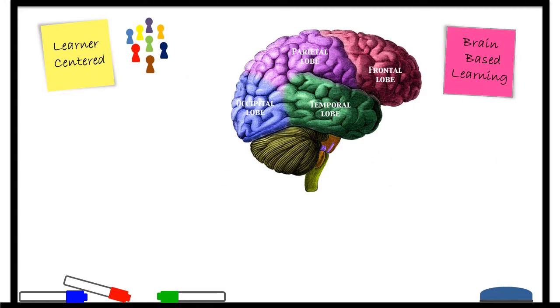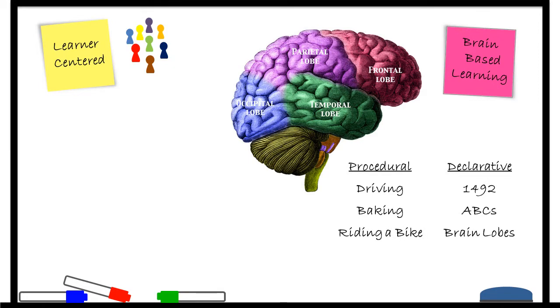Another brain-based approach is tied to the two types of memory: procedural and declarative. Declarative memory is necessary for information, names, dates, lists. Procedural memory is skills, routines, habits, actions.